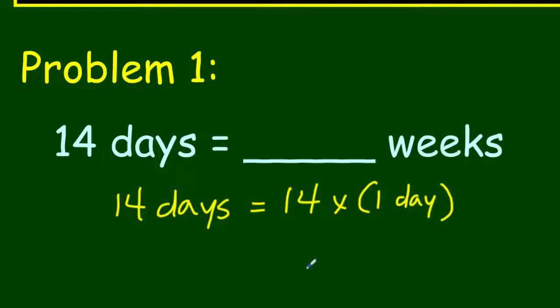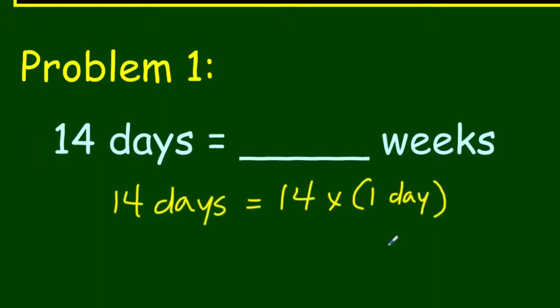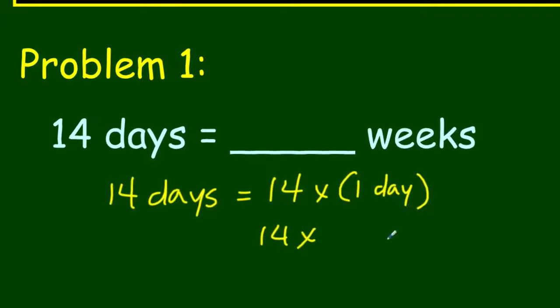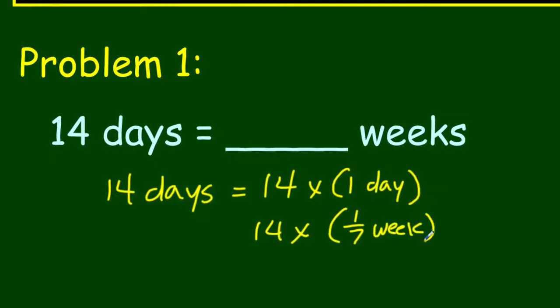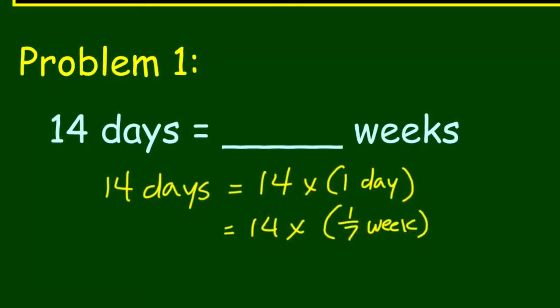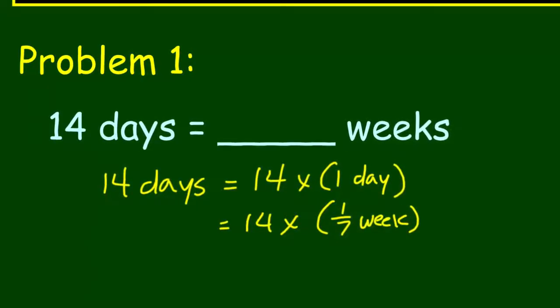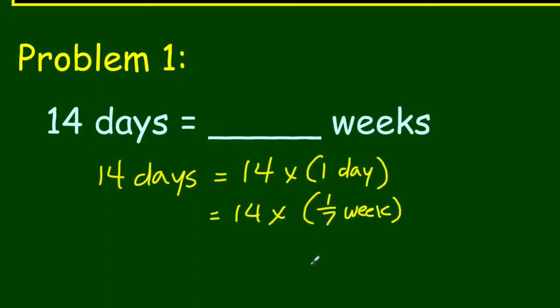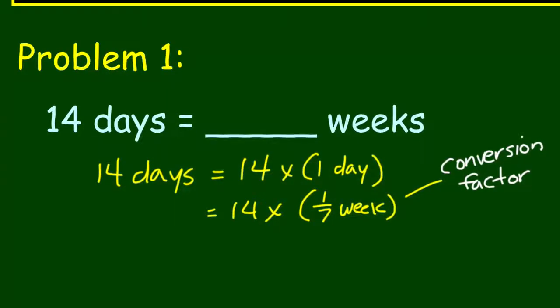By the use of the identity property, we can say that 14 times that one day is going to give us our 14 days. Obviously we have two factors here. We have one factor of 14, another factor of one day. Now, my question is, what fraction of a week is one day? I sure heard somebody out there say one-seventh. So we could actually rename our one day as one-seventh since one day of a week is one-seventh. Let's rewrite this then as 14 times one-seventh week.